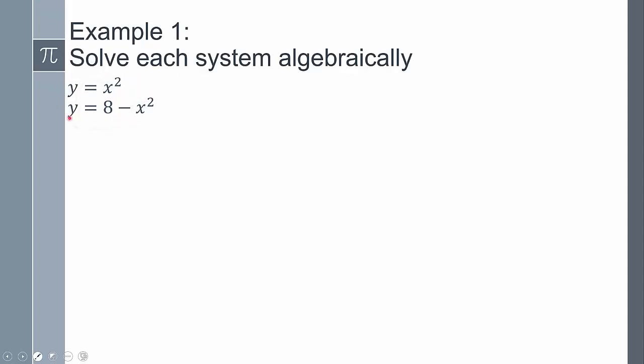In this situation, we'll use the substitution method because we have a variable by itself. Typically, when you have a variable by itself, 99% of the time it's going to be substitution. Here, it says y equals x squared and y equals 8 minus x squared. Both equations equal the same thing, so I can substitute what y equals — which is x squared — in for y in the other equation, because the y values are the same. So I plug x squared in for y.